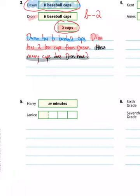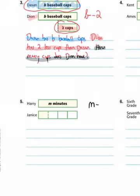In number five, take a look at the picture. It has Harry and minutes. Janice's bar is split into four pieces. So Janice must have one-fourth of whatever Harry has. To show that Janice has one-fourth, we take the M minutes for Harry and divide it into four pieces because that's what fourths means.